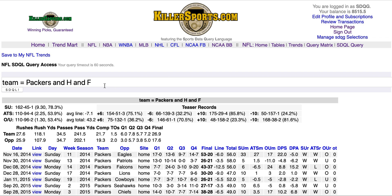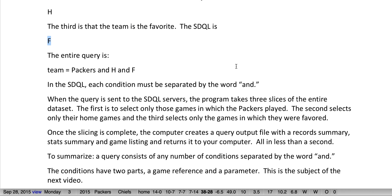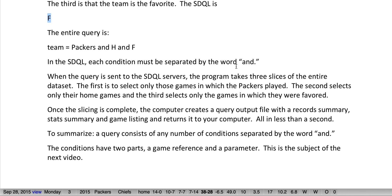So that's the basic structure of the query language: Condition, the word AND, Condition, the word AND, Condition — and you can do as many as you want. The conditions actually have two parts: a game reference and a parameter, and that's going to be the subject of the next video. Thanks for watching and thanks for your interest in the SDQL.